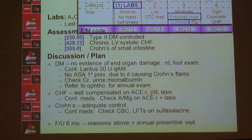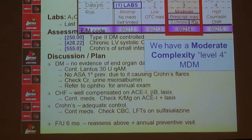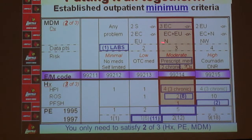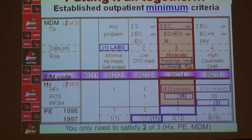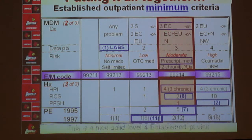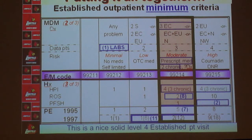For medical decision-making, I only need to satisfy two of the three criteria. This is a solid Level 4 based on problem points and risk level. Putting it all together: Level 4 medical decision-making, Level 4 history, and Level 4 physical. For an established patient, I only need two of three components — this patient is a solid Level 4 established follow-up.